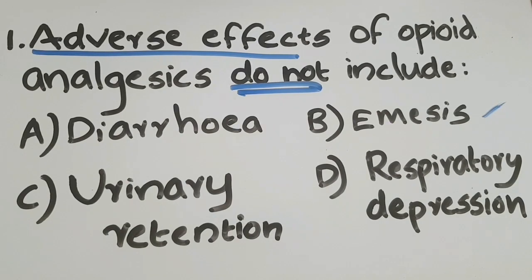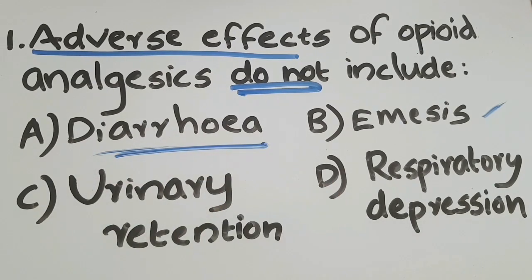Regarding bowel movement, opioid analgesics block receptors in the central nervous system, reducing the brain's ability to handle pain signals. Other functions coordinated by the brain include controlling bowel function. As a result of CNS depression, they lead to decreased bowel movement, causing constipation — not diarrhea.